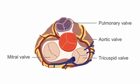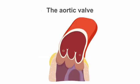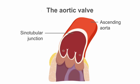Let us now take a look at the aortic valve and aortic root a little closer. From this image we can see the various structures that form the aortic valve complex. The ascending aorta lies above the sinotubular junction, which forms the boundary between the ascending aorta and the aortic root.